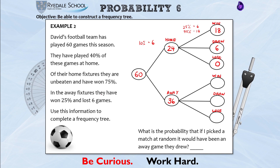In the away fixtures they have won 25% and lost 6 games. I put the 6 losses in first. Then 25% of 36: halve to get 18, halve again to get 9 — so they won 9 away games. The wins and losses together are 9 plus 6, which is 15. Since all three branches must add to 36, they drew 21 away games.